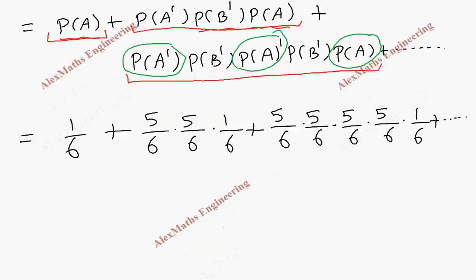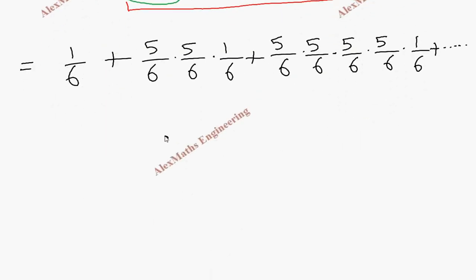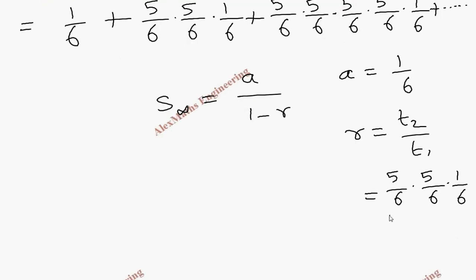Now this is an infinite GP. The formula is S infinity equals A by 1 minus R. A is the first term, which is 1 by 6. R is the second term divided by the first term.